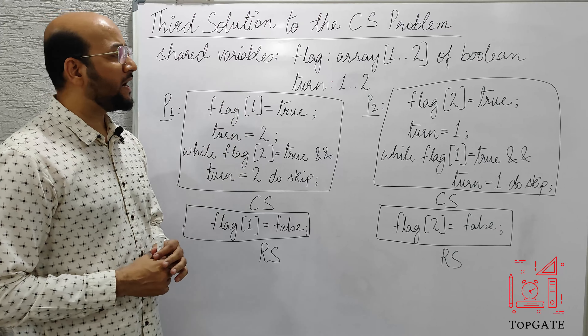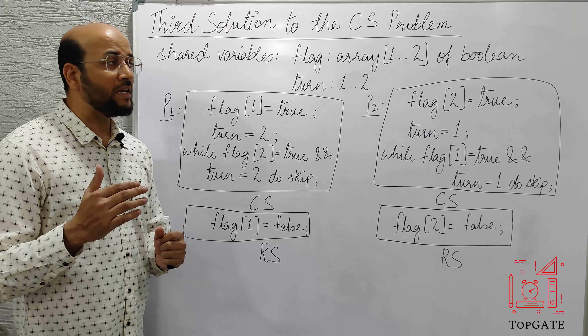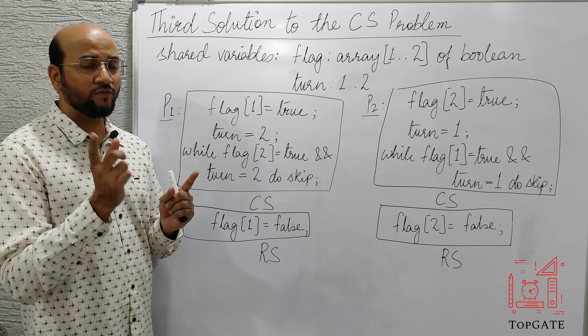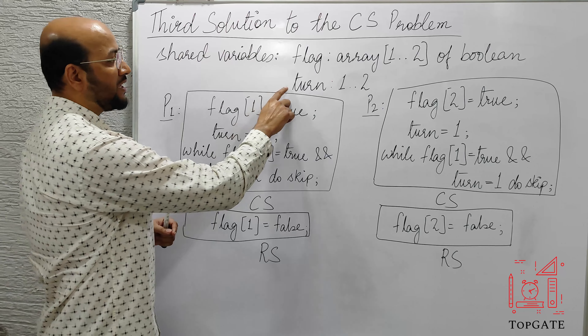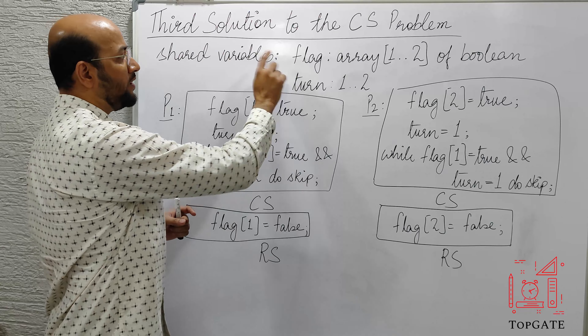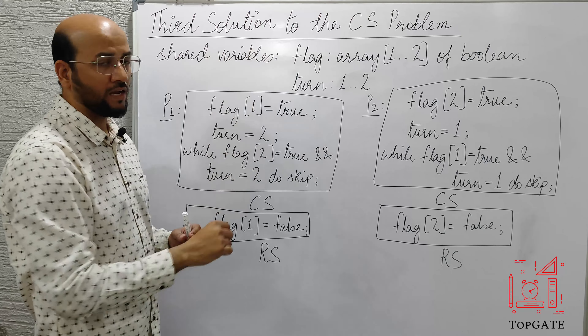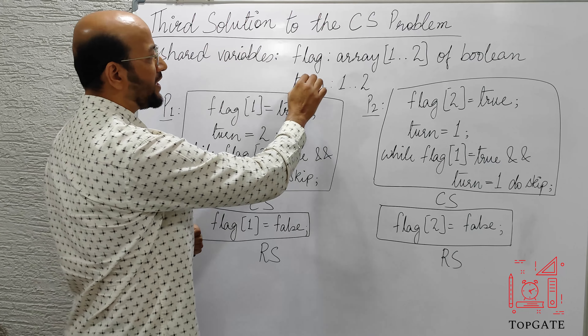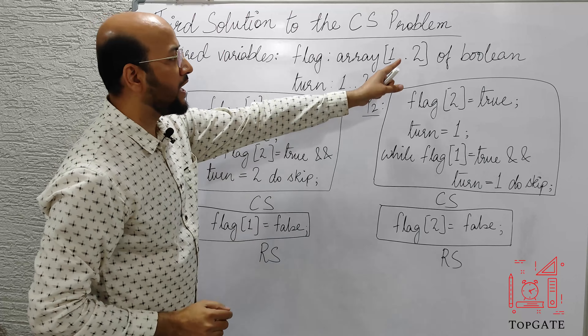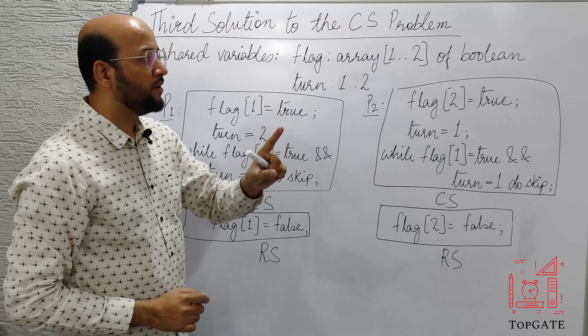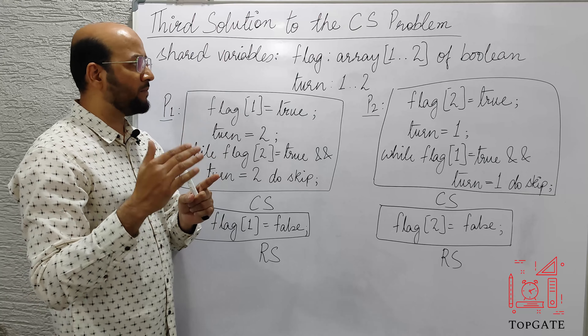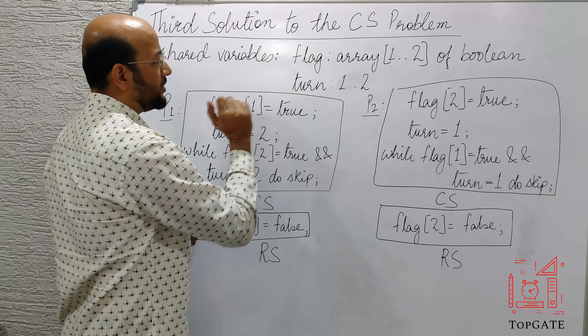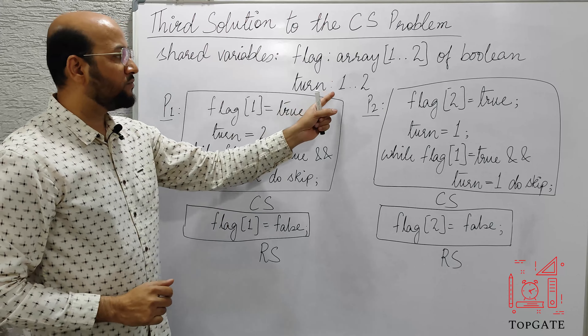This solution is the combination of the first two solutions. In the first solution, we used the variable turn. In the second solution, we used the variable flag. But in this one, we will use both of those variables — the turn variable as well as the flag variable — and both these variables are shared variables. We have the flag variable, which is of array type with two boolean elements: flag[1] and flag[2] can be either true or false. We also have a shared variable turn that can have only two values, either 1 or 2.